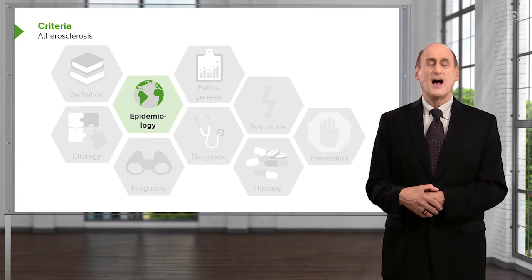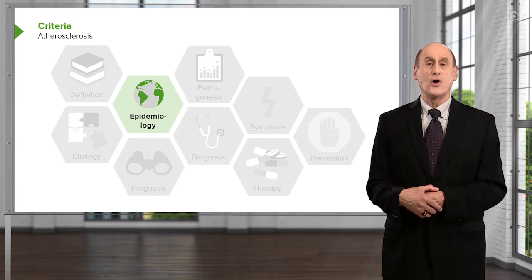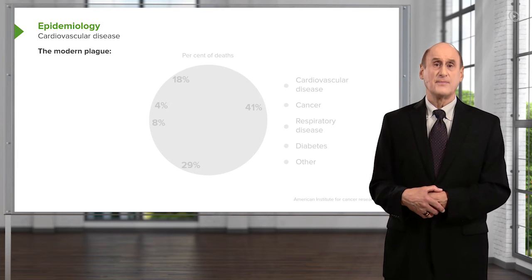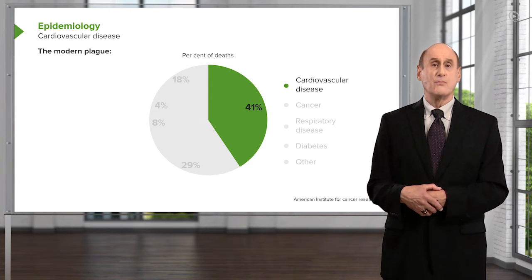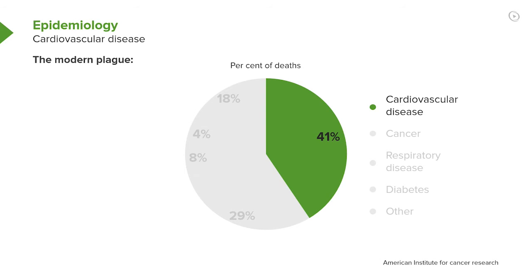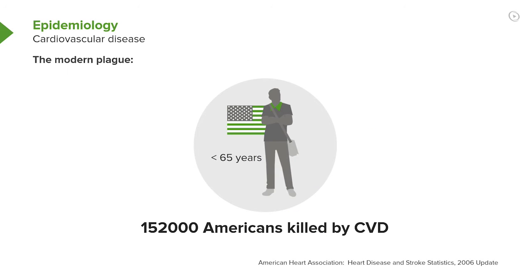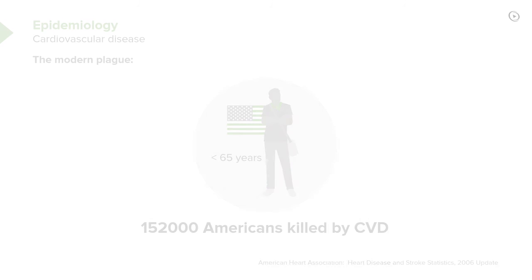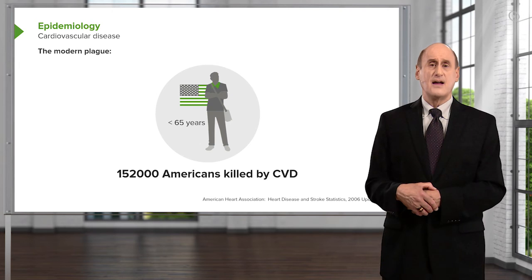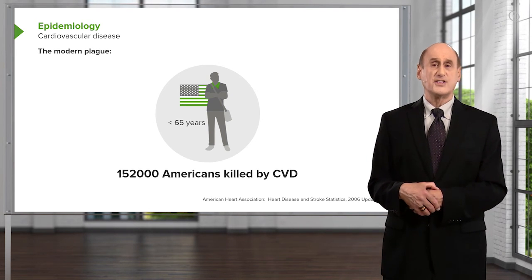Let's talk about the epidemiology. This is the number one cause of death in the world — atherosclerotic disease. Atherosclerotic cardiovascular disease kills more people each year than many well-known diseases such as Alzheimer's, accidents, and cancer. In the United States, over 152,000 Americans are killed by cardiovascular disease every year, and these are individuals under age 65. In 2002, 32% of deaths from cardiovascular disease occurred prematurely — that is, before age 75, which is close to the average life expectancy in the United States. This is a major plague, and there are tremendous efforts in the United States and throughout the world to stem it.